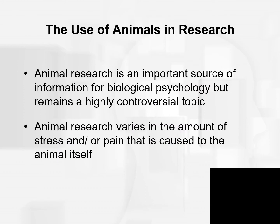The final part of Kalat's introduction concerns the use of animals in research — a really important discussion to think about, including what your own feelings are. Animal research is a really important source of information for biological psychology. As we talk about how the nervous system works, most of that we learned by first looking at animals. My background is that as an undergraduate I would not have taken this class because I was so uncomfortable with some of the research done. But as I've grown older and read much more, I realize the importance of how much we can learn by examining animals.